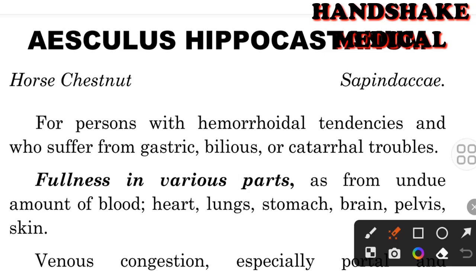Now let us see its constitution — for which type of people this medicine is suited. It is for persons with hemorrhoidal tendency, who have a tendency towards hemorrhoids or piles. They suffer from gastric, bilious, or catarrhal troubles. Gastric means stomach-related problems, bilious means liver and gallbladder-related troubles, and catarrhal trouble means inflammation of mucous membranes, especially of the ear and nose.